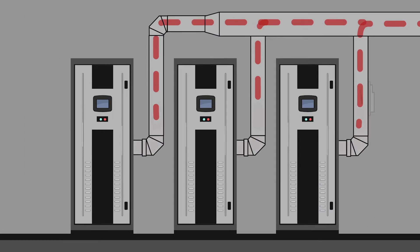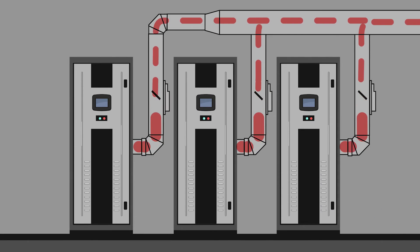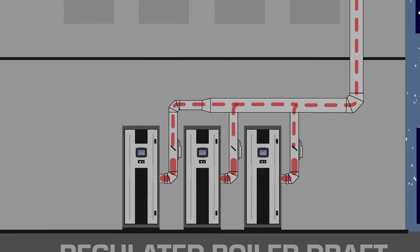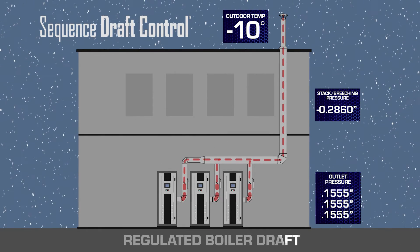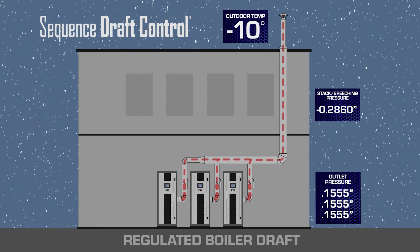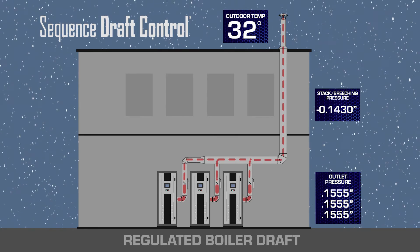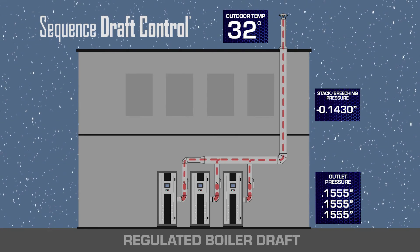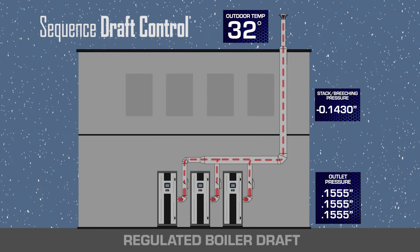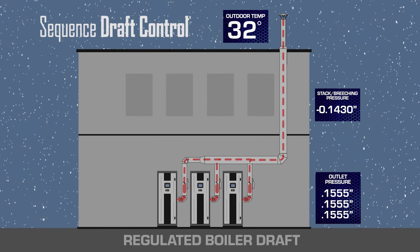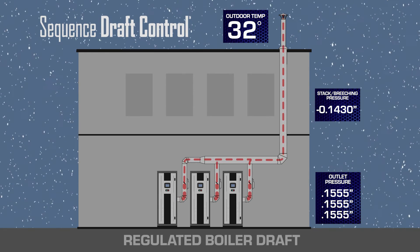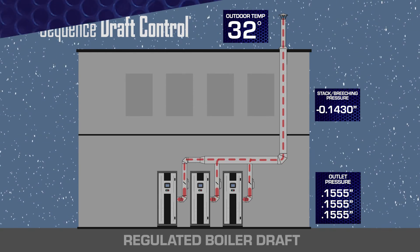Now if we apply Shebbler sequence draft control dampers to a common vented system, we're able to monitor and control each outlet pressure of the appliance independently of the stack pressure reading. This allows us to have Category 4 operation in a common vented system, and allows us to automatically compensate for various firing rates and ambient temperatures to maintain that Category 4 operation of maximum efficiency at all times.